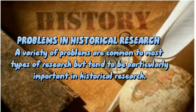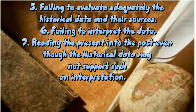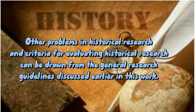Problems in Historical Research: A variety of problems are common to most types of research but tend to be particularly important in historical research. These include: 1. Deciding how much data are enough. 2. Improperly selecting data. 3. Relying too heavily on secondary sources of information. 4. Investigating an overly broad problem. 5. Failing to evaluate adequately the historical data and their sources. 6. Failing to interpret the data. 7. Reading the present into the past even though the historical data may not support such an interpretation. Other problems and criteria for evaluating historical research can be drawn from the general research guidelines discussed earlier.